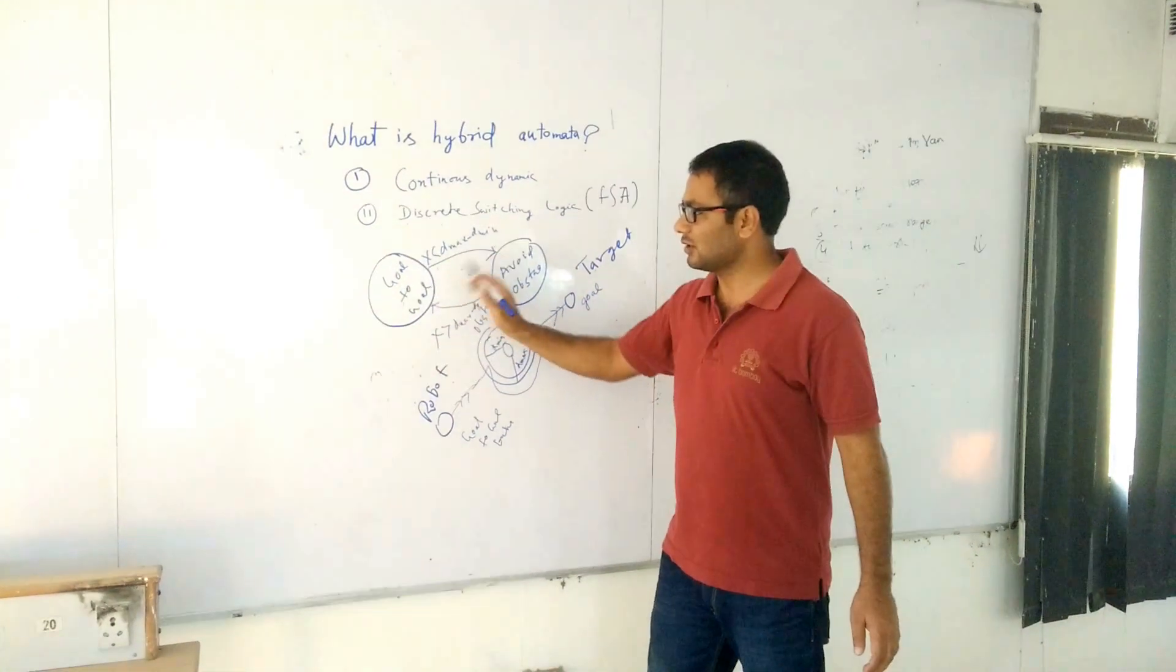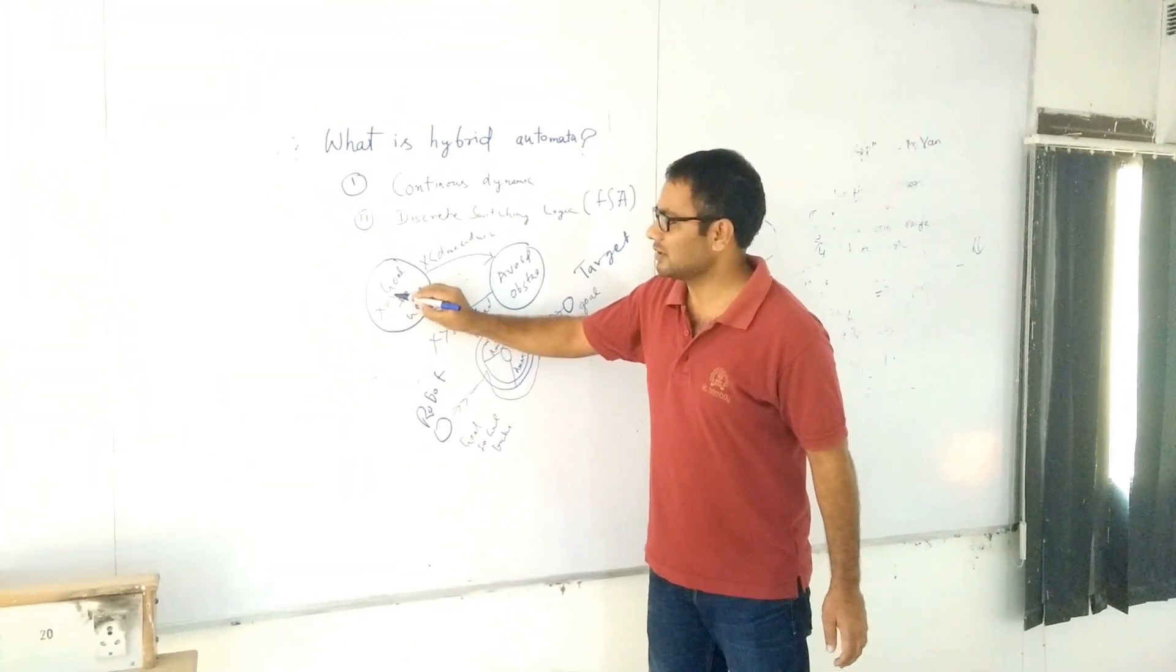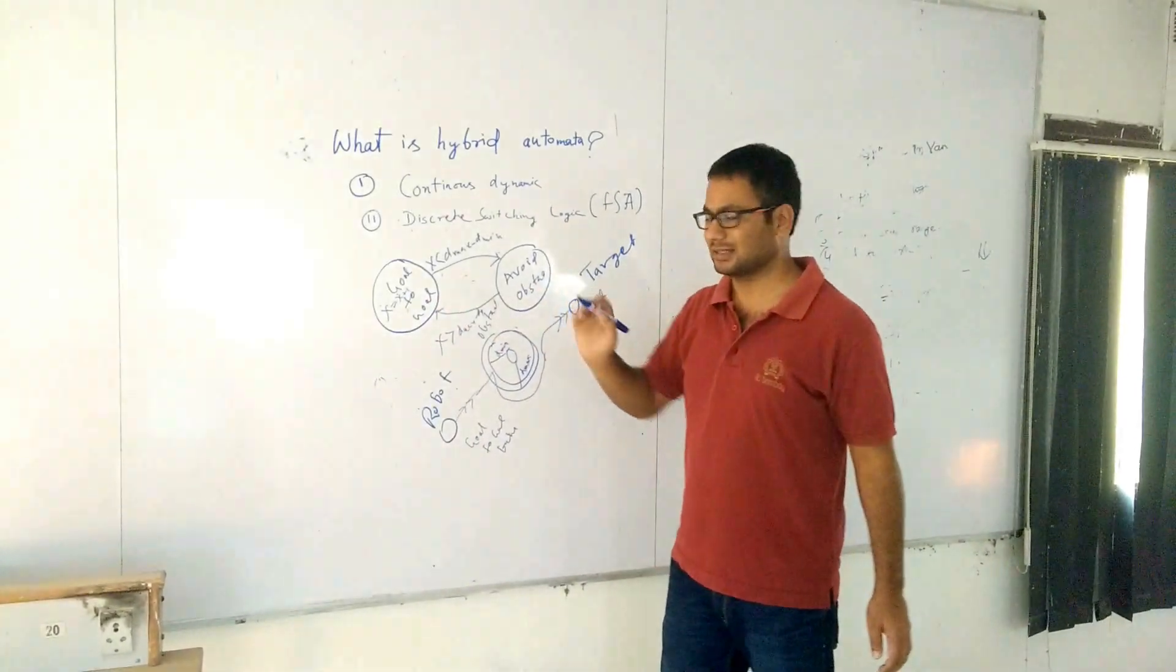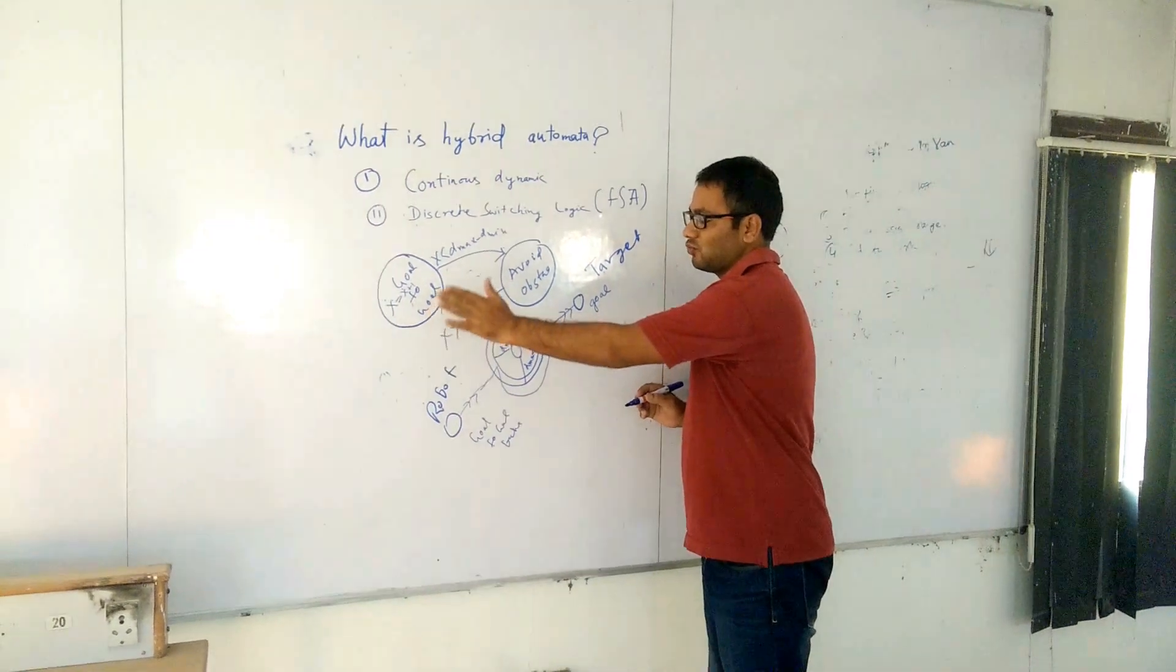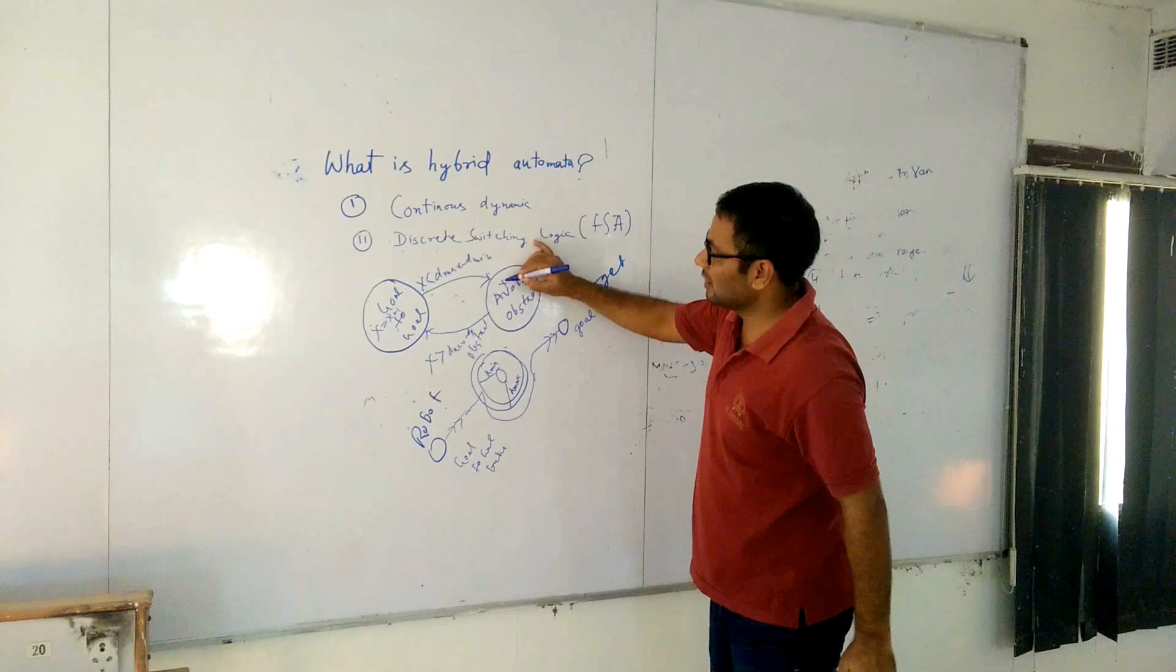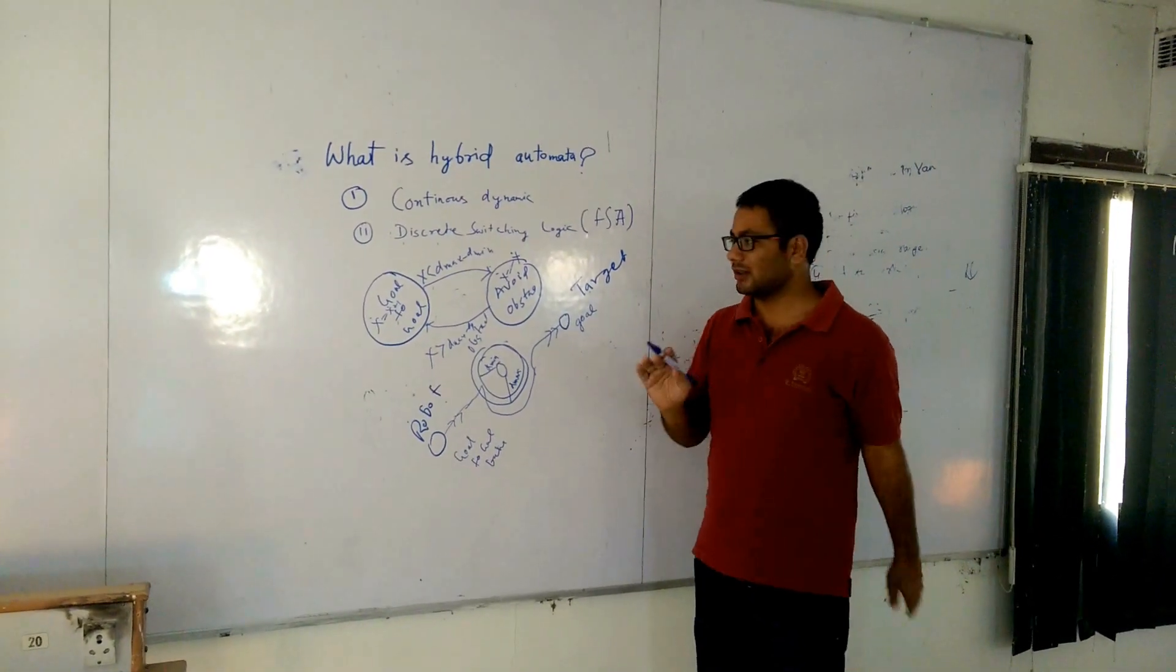So once I am moving from here to here, till I am in the goal-to-goal behavior, I will continuously increase my speed by one kilometer per hour. But immediately, the moment I encounter any obstacle, I will avoid the behavior. I will immediately take negative velocity so I can avoid the obstacle.